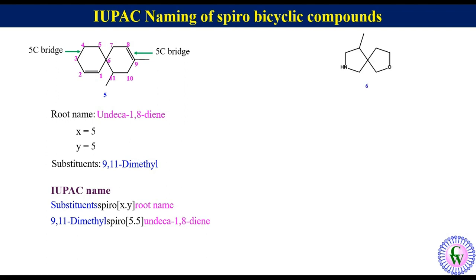Example 6: in this example also the two rings are of the same size, and both rings have heteroatoms at the same position. So the priority of numbering will be decided based on the priority of the heteroatom. The atomic prefix for oxygen is 'oxa' while that for nitrogen is 'aza'. The 'oxa' prefix has higher priority than 'aza', so the right-side ring containing oxygen will be numbered first. The numbering will be 1, 2, 3, 4, 5, 6, 7, 8 and 9.